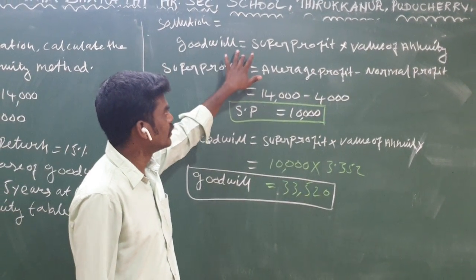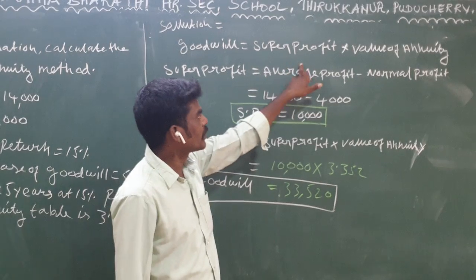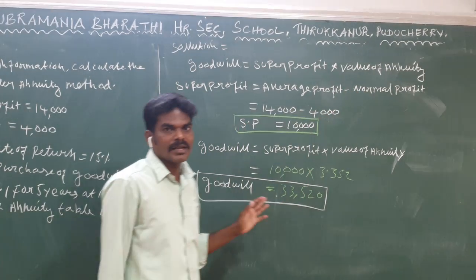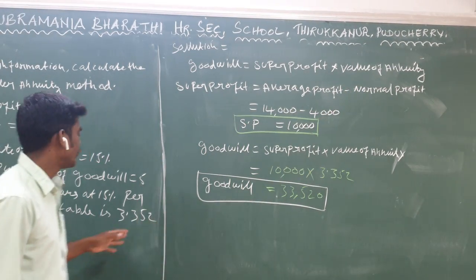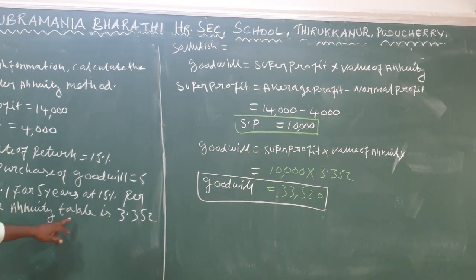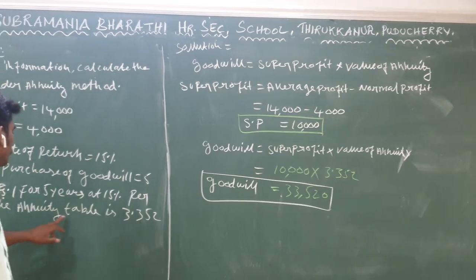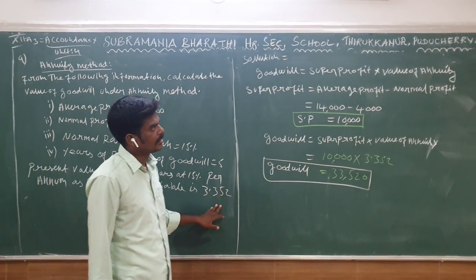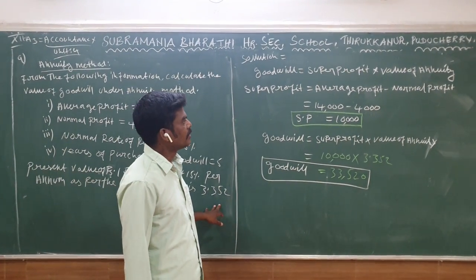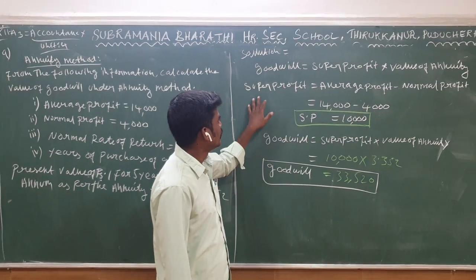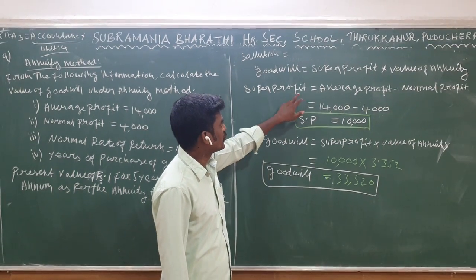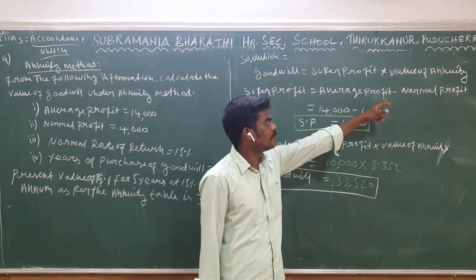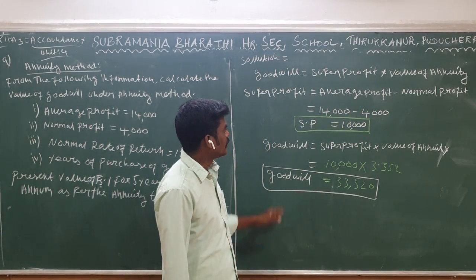Goodwill is equal to super profit multiplied by the value of annuity. Super profit is equal to average profit minus normal profit.